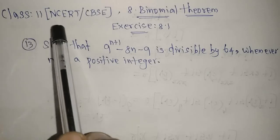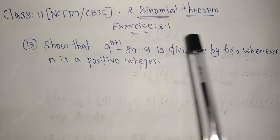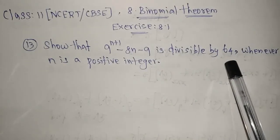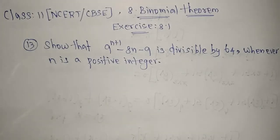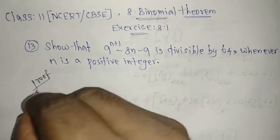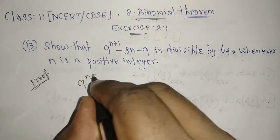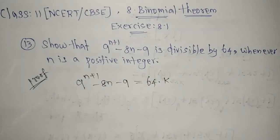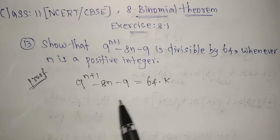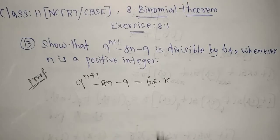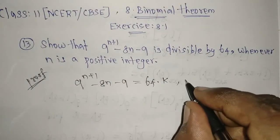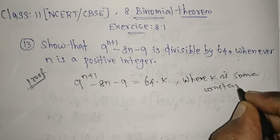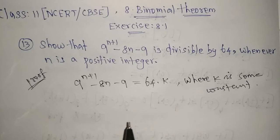Welcome to the channel. Today we are going to see Class 11 NCERT/CBSE Chapter 8 Binomial Theorem, Exercise 8.1, Question 13: Show that 9^(n+1) − 8n − 9 is divisible by 64 whenever n is a positive integer. What we need to prove is that 9^(n+1) − 8n − 9 equals 64 times some constant k, meaning the whole expression is divisible by 64.